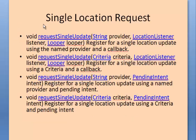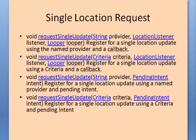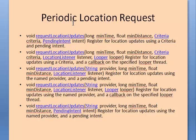These are the methods used to request location updates in the Android framework. You can request a single update by specifying the provider (GPS, network, or passive) along with the listener. Alternatively, you can specify criteria instead of a provider, and the Android framework will choose the provider based on your criteria. You can also use a pending intent with a broadcast receiver instead of a location listener. For a periodic request, you specify the minimum time between updates and minimum distance, with other parameters the same as a single location request.